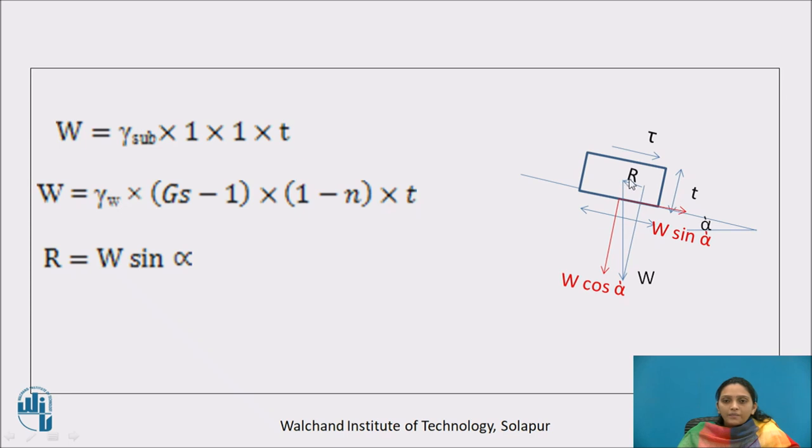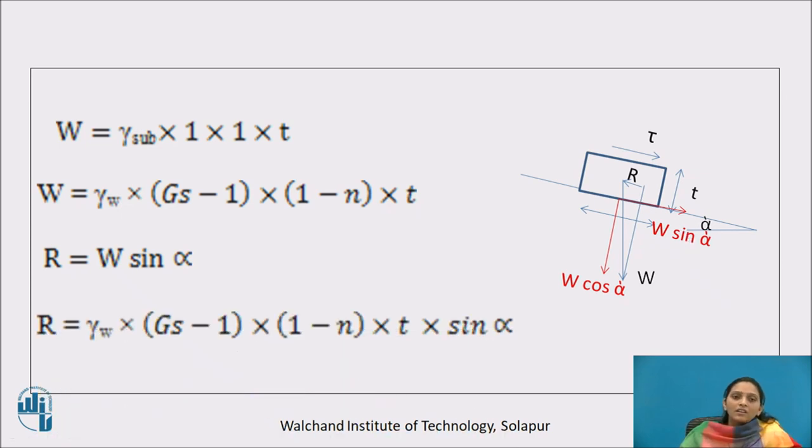Here, apply the equilibrium condition. R and W sin alpha are in same direction, so they must be same. So R equals W into sin alpha. Put W in the equation, so R is gamma W into Gs minus 1 into 1 minus N into t into sin alpha. So here we calculated W, put in the equation, you will get R.